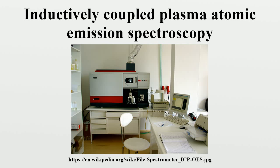The ICP-AES is composed of two parts: the ICP and the optical spectrometer. The ICP torch consists of three concentric quartz glass tubes. The output or work coil of the radio frequency generator surrounds part of this quartz torch. Argon gas is typically used to create the plasma.